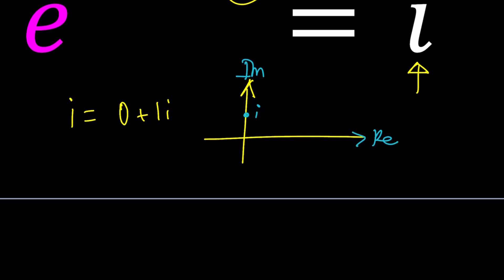Now, the distance from 0 is defined as the modulus or the absolute value in this case. That happens to be 1. And another variable we need to worry about is the argument, which is denoted by theta, and that will be pi over 2 radians.